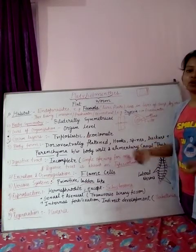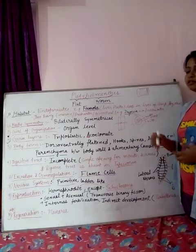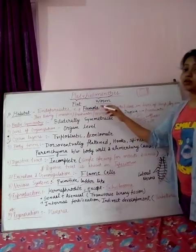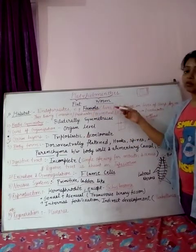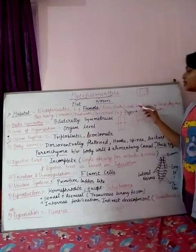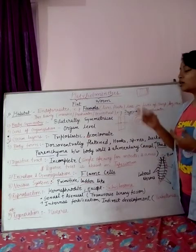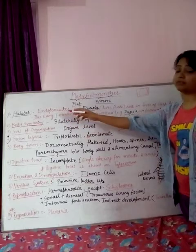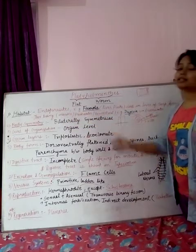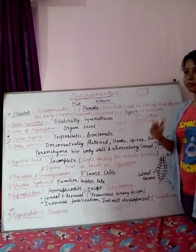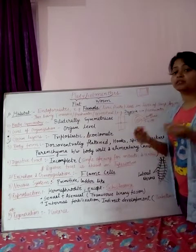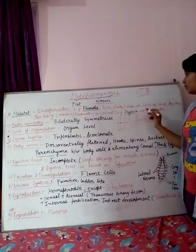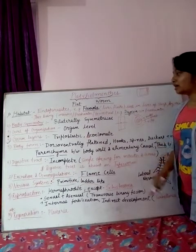The host can be a dog, a man, a sheep, or anything. One example is Fasciola hepatica, whose common name is liver fluke, and it lives inside the liver of sheep, humans, and dogs. They can also be free-living, meaning they can live in marine, freshwater, or terrestrial environments. One example of a free-living Platyhelminthes is Dugesia, which is a freshwater species.